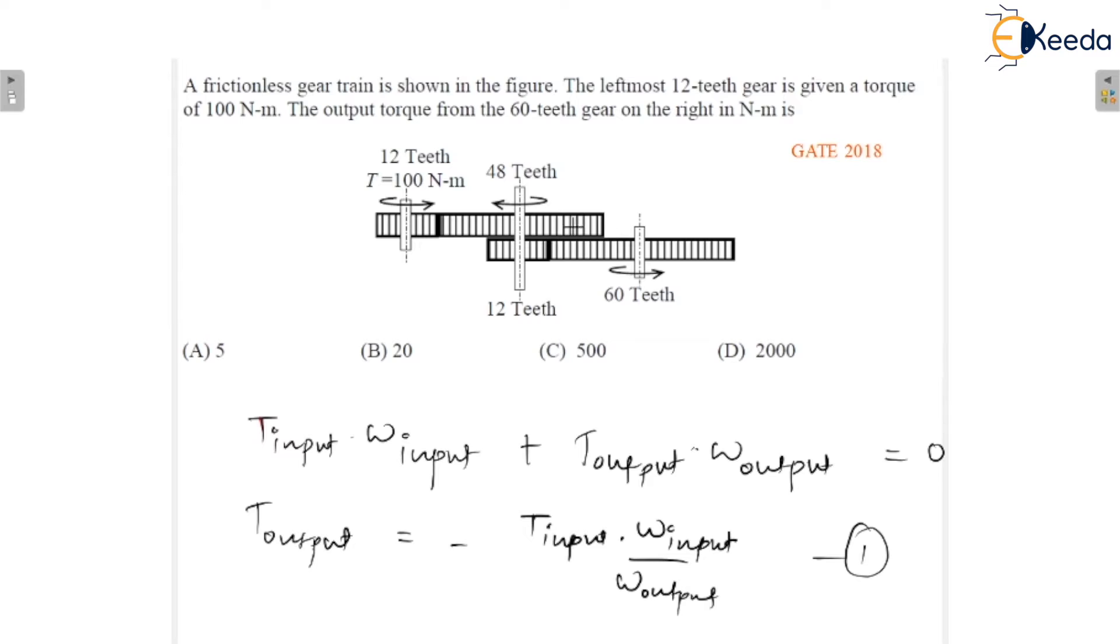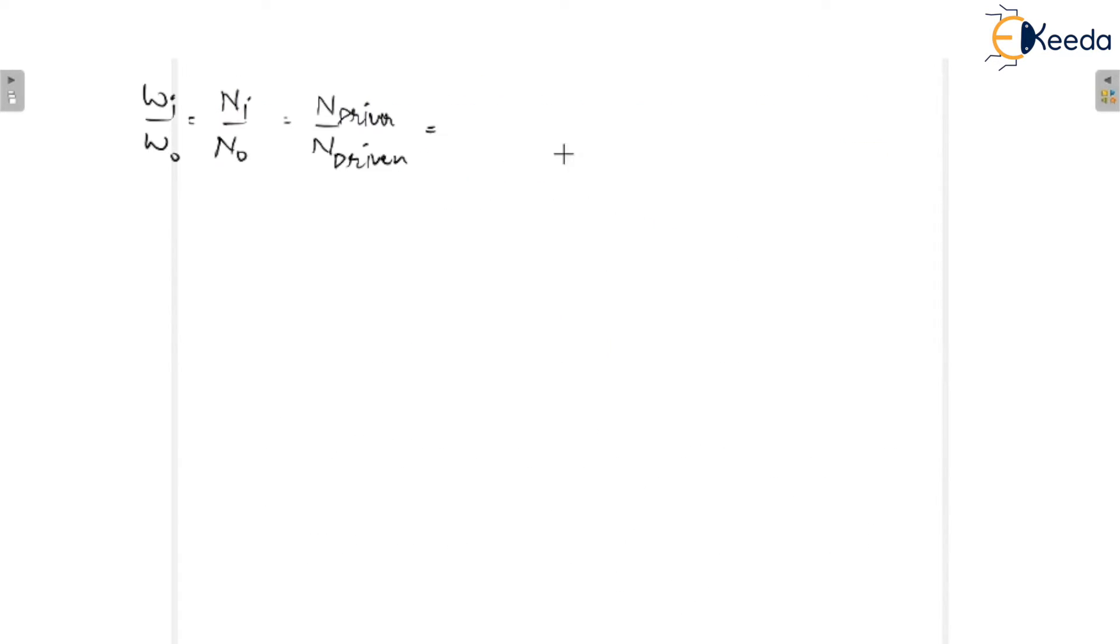And we all know that input is the driver. So, this is the speed of driver and this is the speed of driven. That means this is the product of number of teeth on the driven upon product of the number of teeth on driver gears. How many driven are there? This is driven and this is driven.